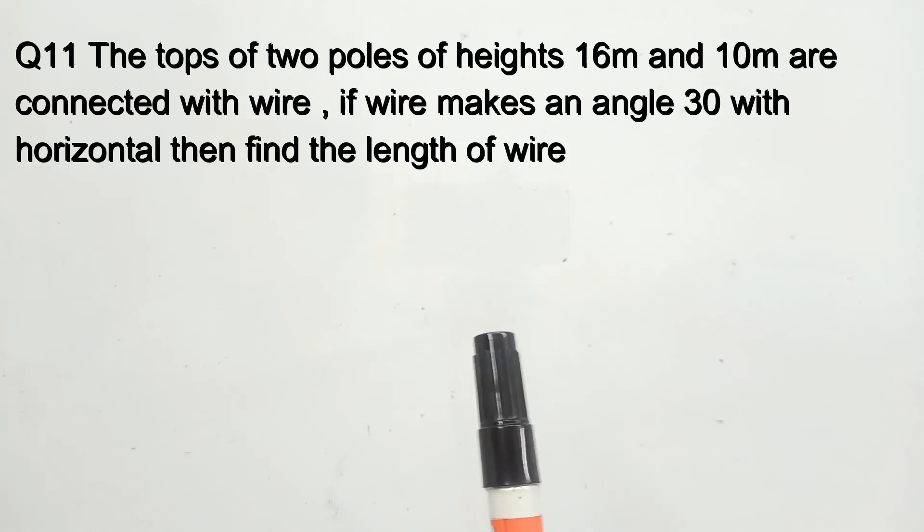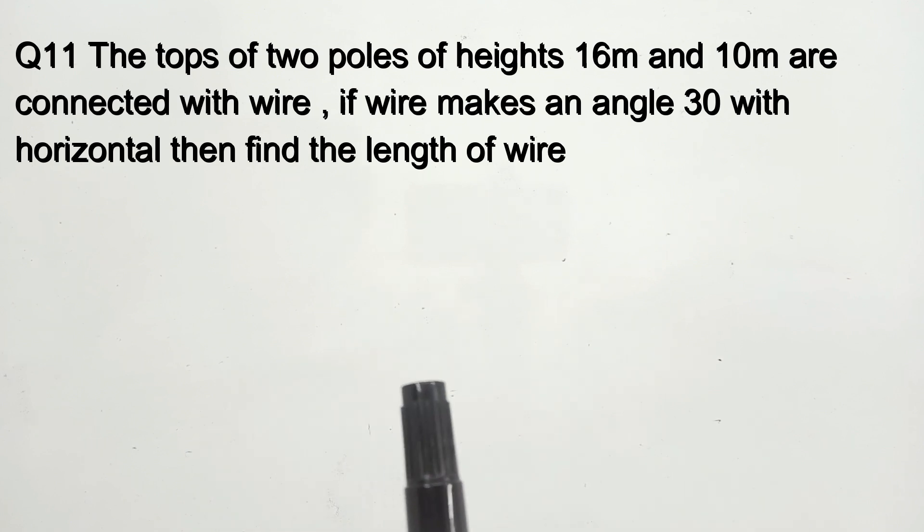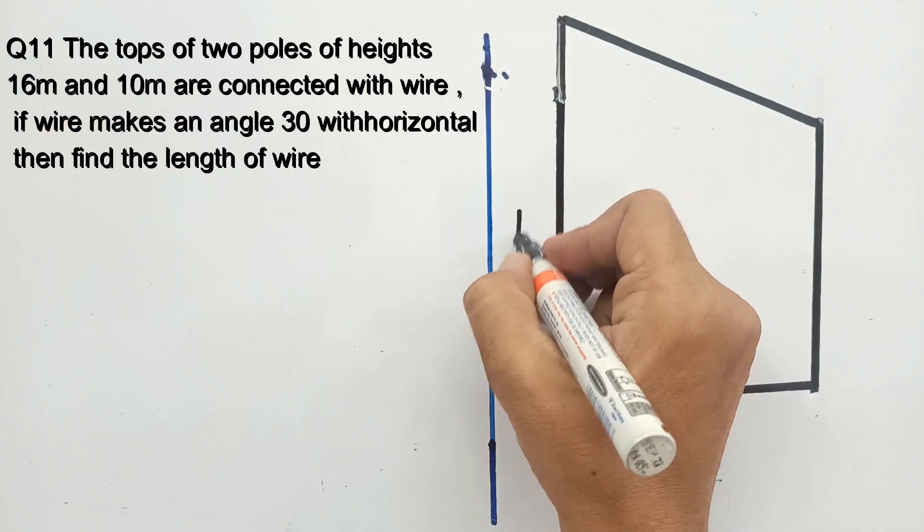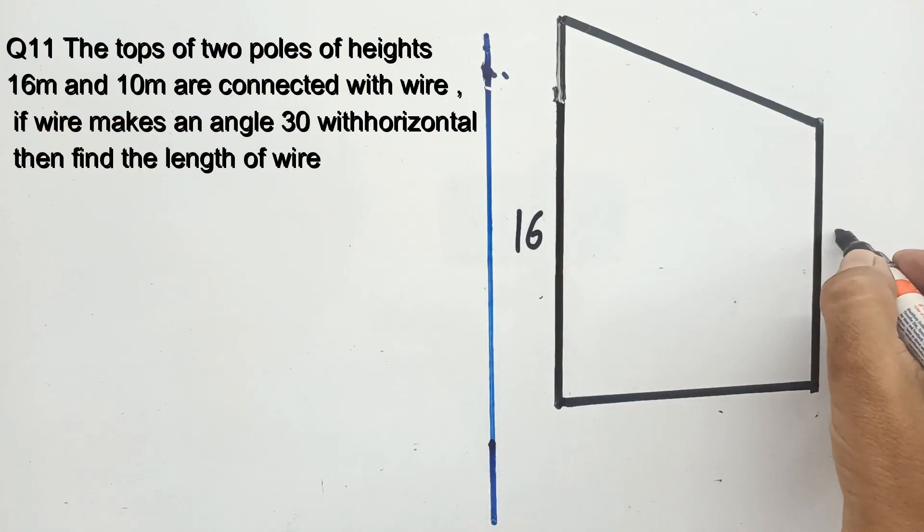The tops of two poles of heights 16 and 10 meters are connected by wire. If the wire makes an angle of 30 degrees with the horizontal, then find the length of the wire. One pole is of height 16 meters.